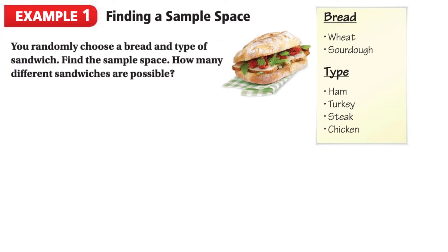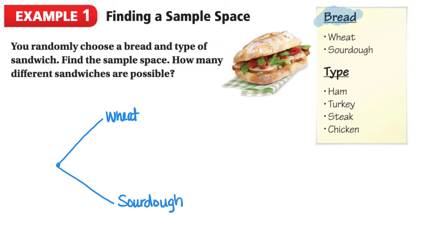If we think of our sandwich, the first thing we need is bread, and we can either have wheat or sourdough. So from this point we're going to make two branches, one for wheat and the other for sourdough. After we choose the bread, we can randomly select ham, turkey, steak, or chicken.